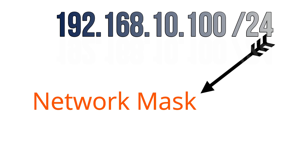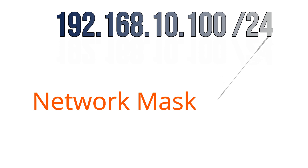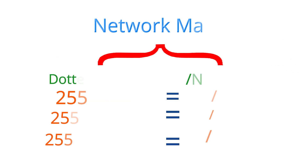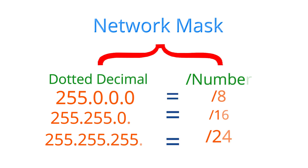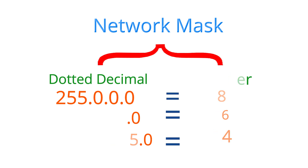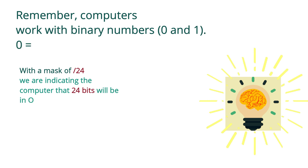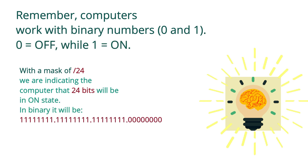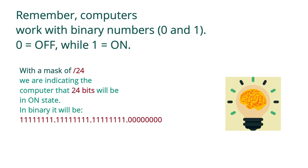A network mask is simply a 32-bit number that helps us to identify the network part in an IP address. Those masks can be written in two ways: dotted decimal and using a slash followed by a number. When we write a network mask using the second method, the number after the slash tells us the number of bits in the on state inside the IP address that belong to the network part.